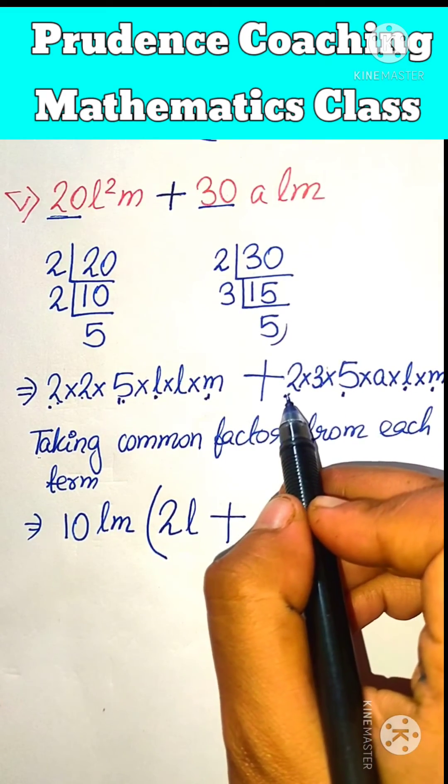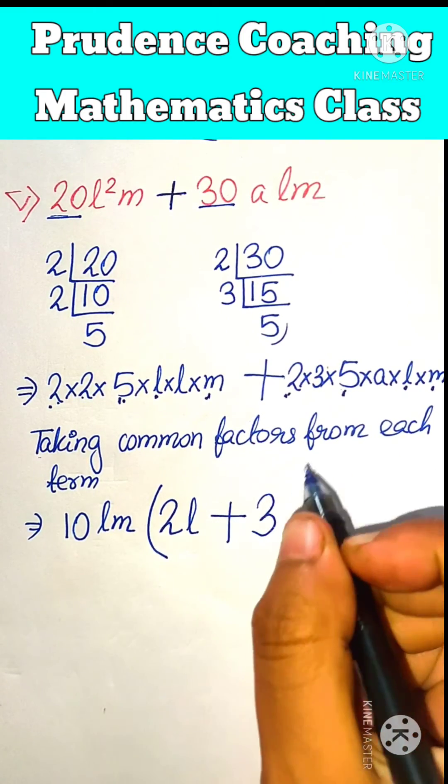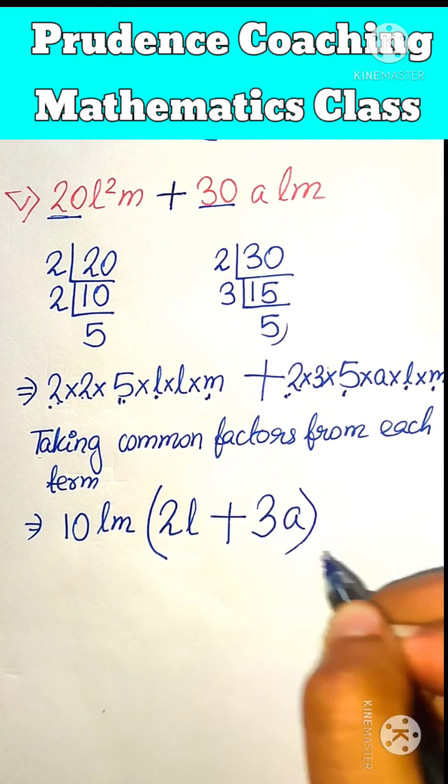We write the separator as it is. Now we have taken out this 2, this 5, so we are left with 3 as the constant part. And here we have taken this one l and m, we are left with a. So this is our final answer.